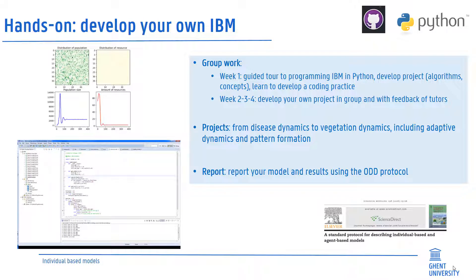This class is a hands-on course. You will first receive a guided tour to programming in Python, in which you learn to develop coding algorithms, concepts, and good coding practice. From that point onwards, you are expected to develop your own project in groups with feedback from the tutors. Projects may range from disease to vegetation dynamics and may include adaptive processes with a focus on pattern formation. You are expected to report your model and results using the ODD protocol, a standard protocol for describing individual and agent-based models. Documentation will be made available. Now, let's start coding.